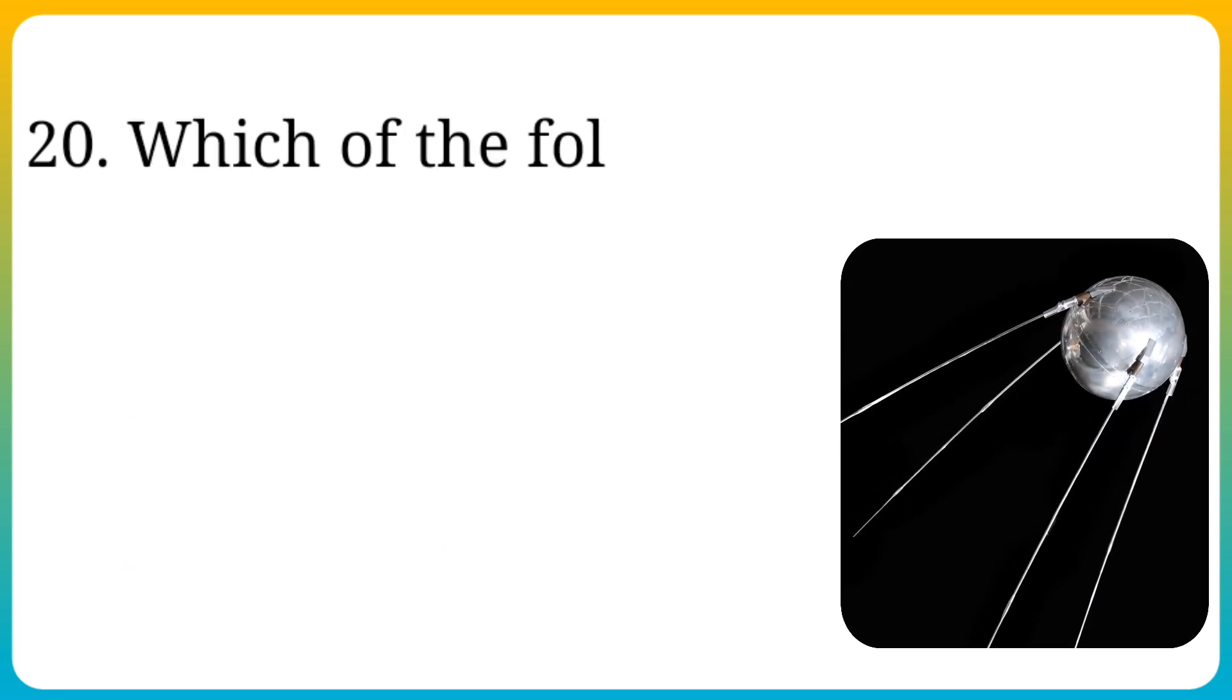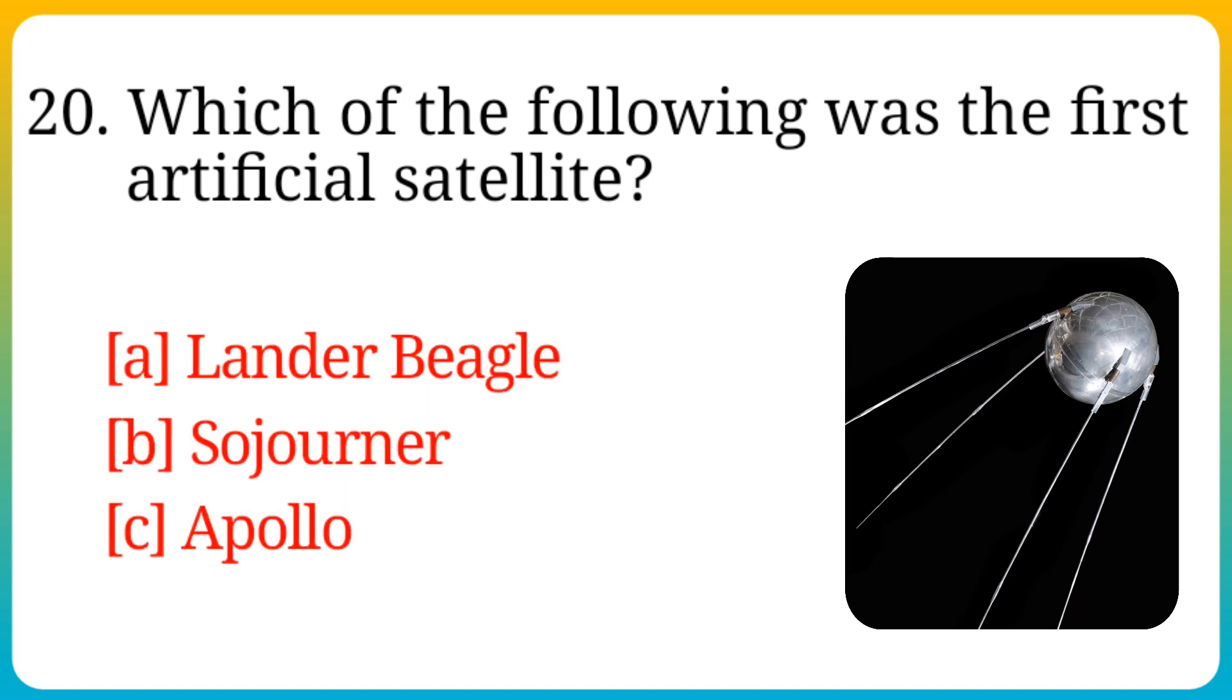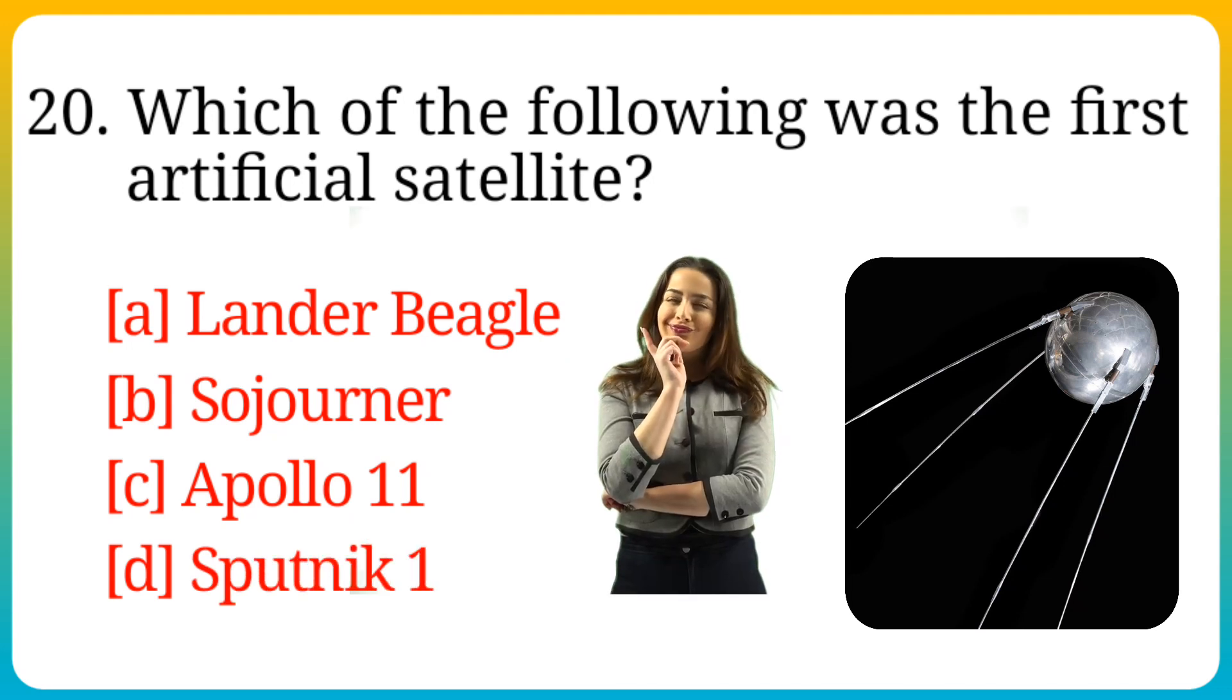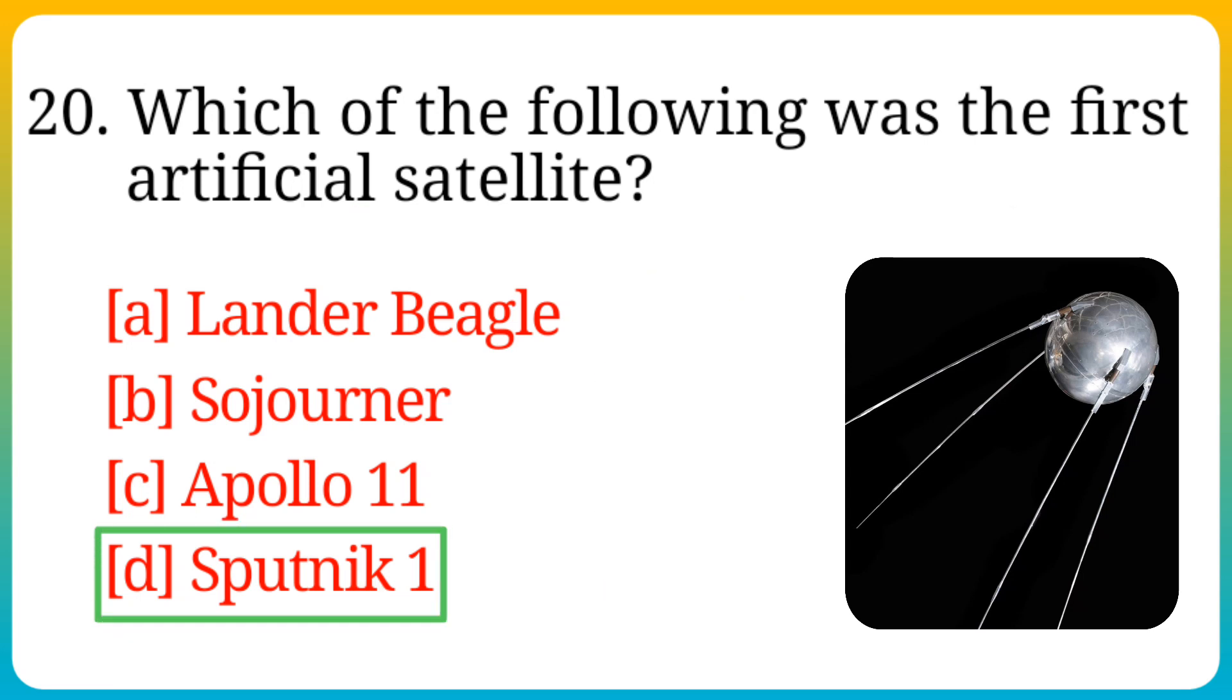Question number 20. Which of the following was the first artificial satellite? Options are: A. Lander Beagle, B. Sojourner, C. Apollo 11, D. Sputnik 1. Answer is option B. Sputnik 1.